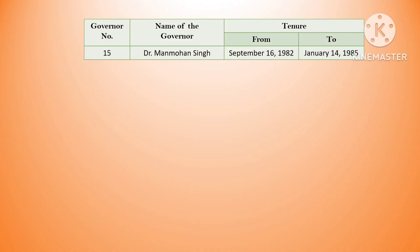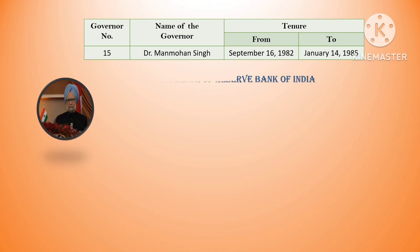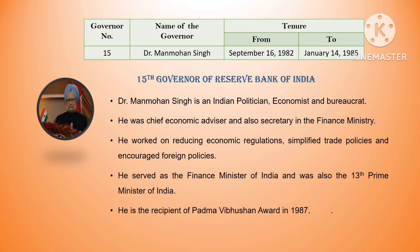The fifteenth governor was Dr. Manmohan Singh. His tenure was from September 16, 1982 till January 14, 1985. He was an Indian politician, economist, and bureaucrat. He served as chief economic advisor and secretary to the finance department. He worked on reducing economic regulations, simplified trade policies, and encouraged foreign investment. He later served as Finance Minister of India and as the 13th Prime Minister of India. He is also a recipient of the Padma Vibhushan in 1987.